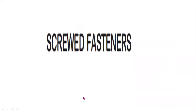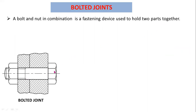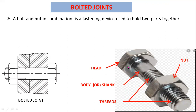Our topic today is screwed fasteners or bolted joints. A bolt and nut in combination is a fastener used to hold two parts together. Here you can observe — this is a bolt, this is a bolt head, this is a bolt shaft, and this one is a nut. A bolt and nut combination is a fastening device used to hold two parts together.